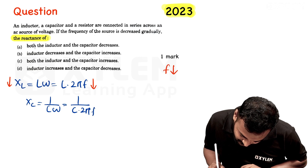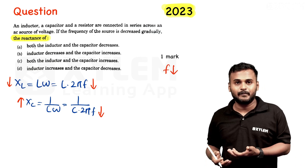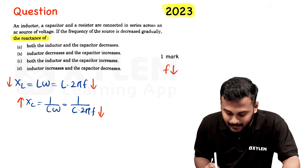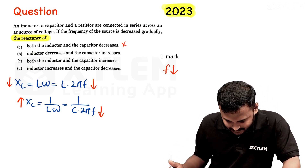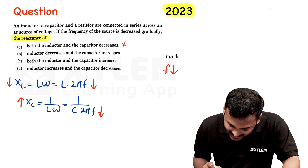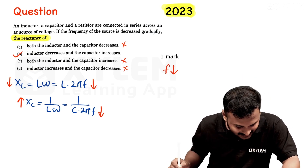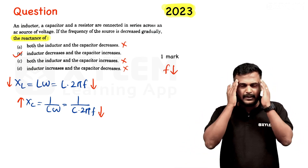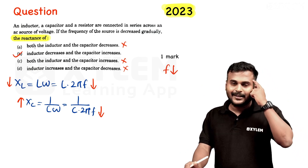XC equals 1 divided by (C × 2πf). So XC is inversely proportional to frequency — if frequency decreases, XC increases. The options are: both inductor and capacitor decrease; inductor decreases and capacitor increases; both increase; inductor increases and capacitor decreases. Since frequency decreases, XC increases, so option B is correct: inductor reactance decreases and capacitor reactance increases.